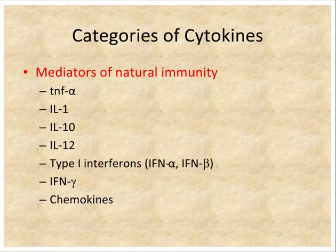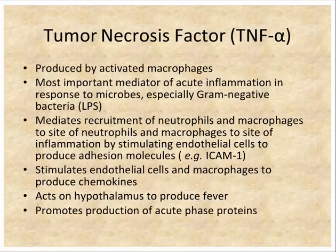The ones we'll discuss are TNF-alpha, IL-1, IL-10, IL-12, the type 1 interferons, interferon gamma, and chemokines. TNF-alpha is primarily produced by macrophages and is one of the main cytokines important in activating macrophages, together with LPS from gram-negative bacteria. It has the ability to recruit neutrophils and activate them, and it stimulates the expression of ICAM on endothelial cells, allowing macrophages and PMNs to get into tissue spaces.